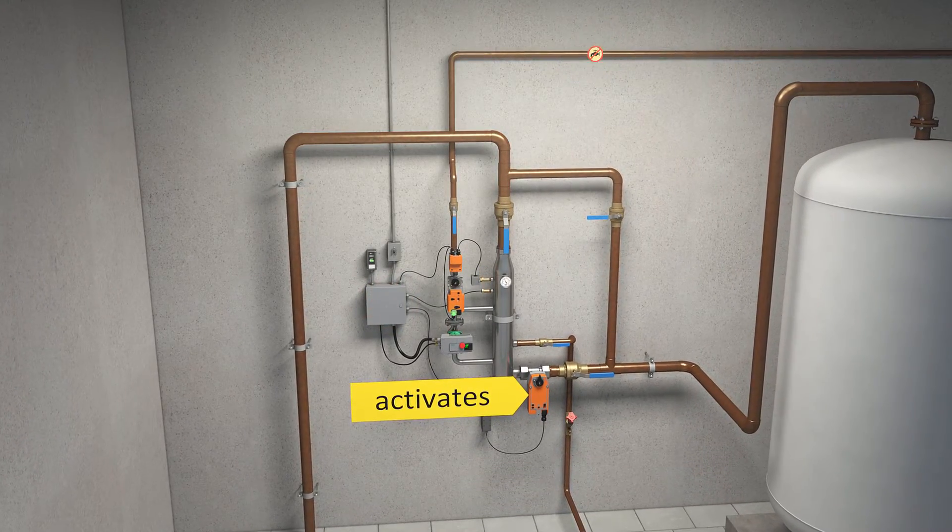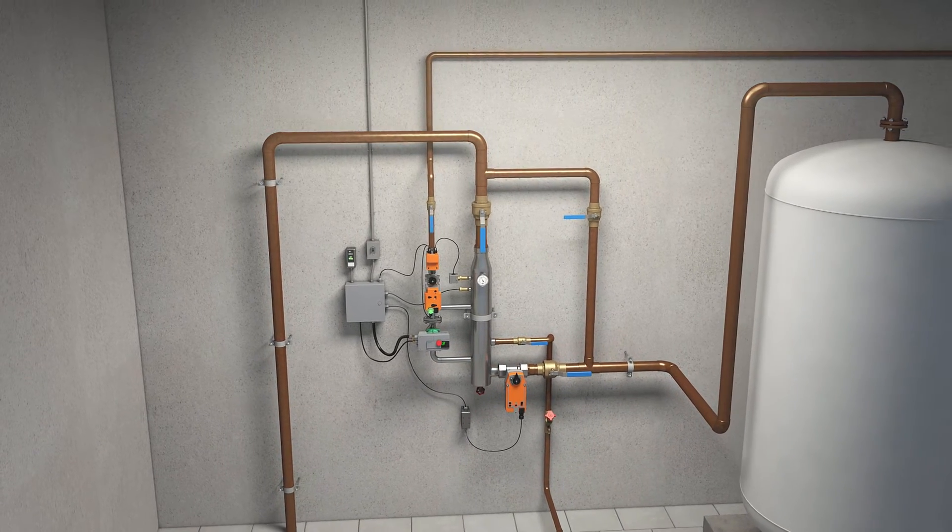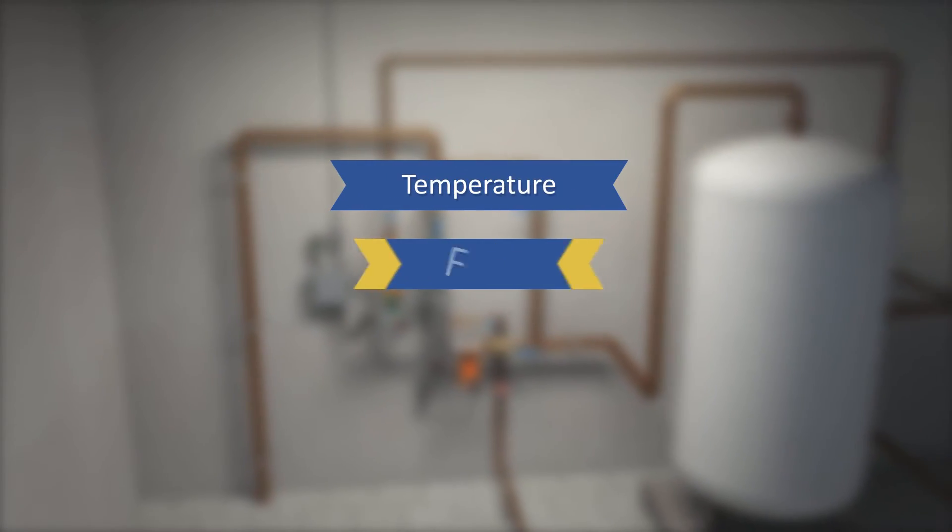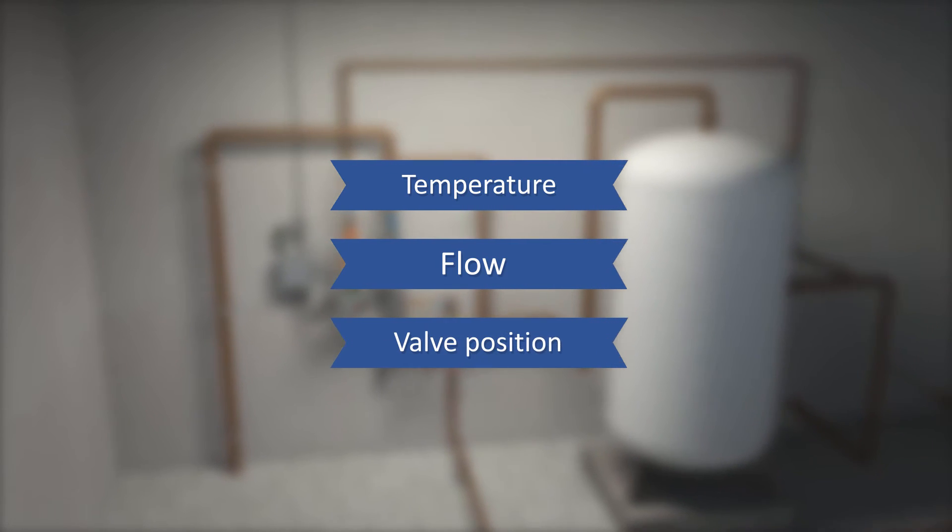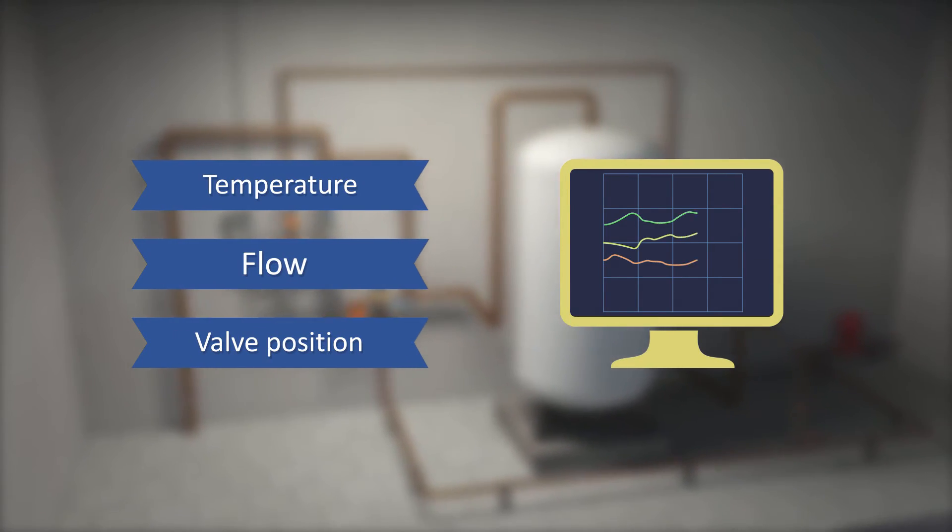The fail-safe valve will reset once the system has been restored. FlowMix continually tracks and stores data such as temperature, flow and valve position. This information can be monitored remotely to achieve optimal energy savings.